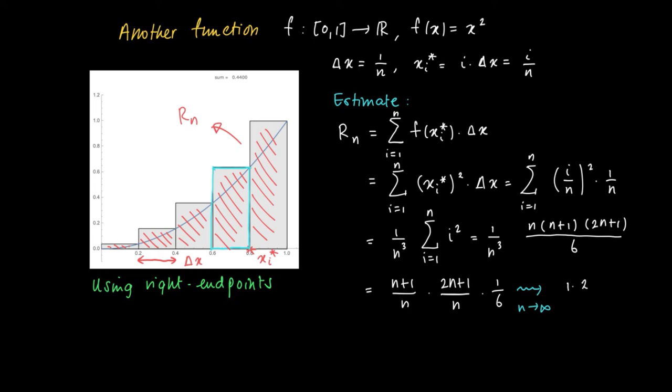Well, if we choose n very large, or let n go to infinity, then we see that (n+1) divided by n converges to 1, and (2n+1) divided by n converges to 2. So we get, as a result, that the product converges to 1 times 2 times 1/6 equals 1/3.